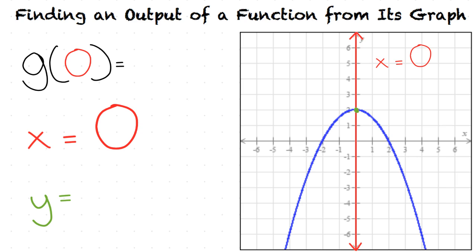we look to see what is the y coordinate of that point. In this case, our y coordinate is 2. This means that our final answer is g of 0 equals 2.